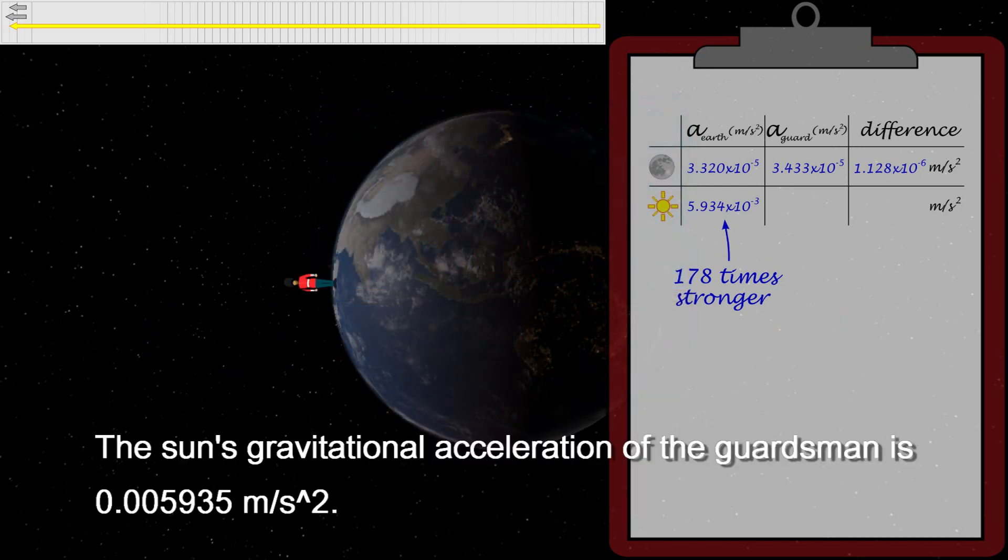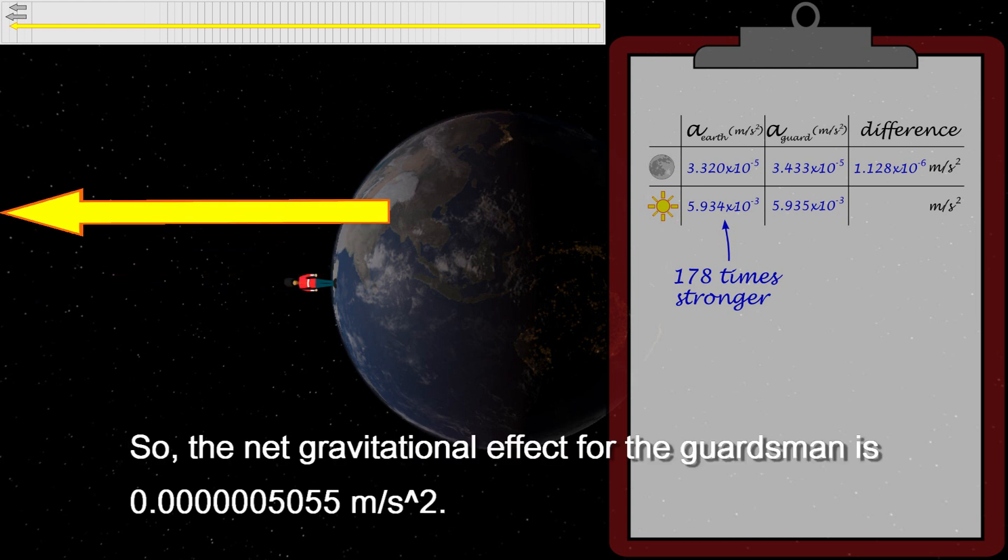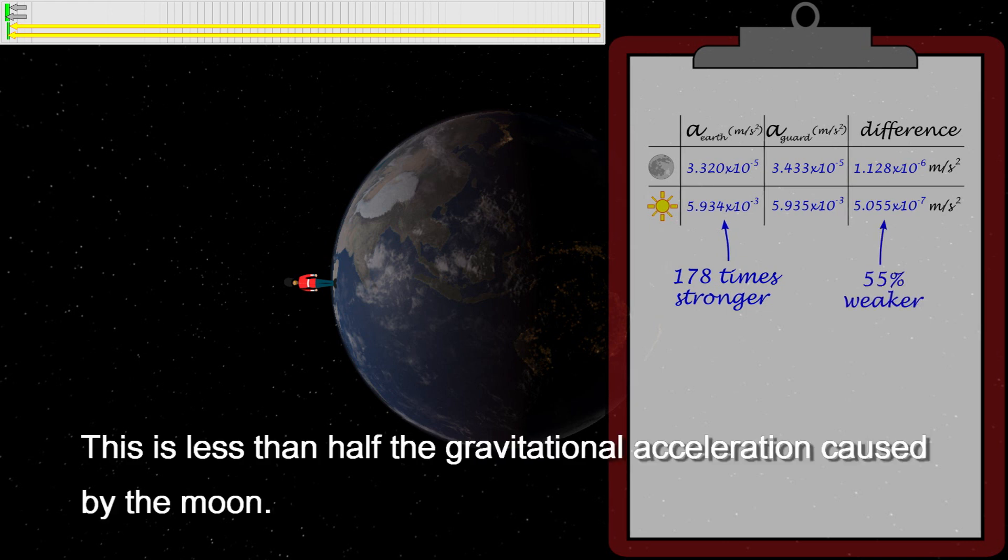The Sun's gravitational acceleration of the Guardsman is 5.935×10^-3 meters per second squared. So the net gravitational effect for the Guardsman is 5.055×10^-7 meters per second squared. This is less than half the gravitational acceleration caused by the Moon.